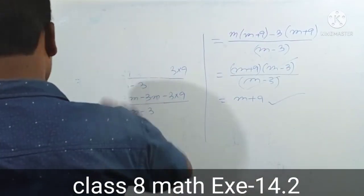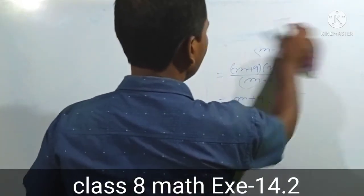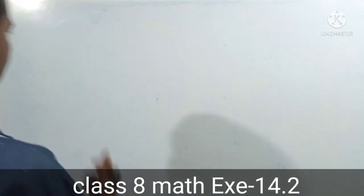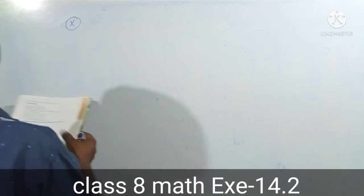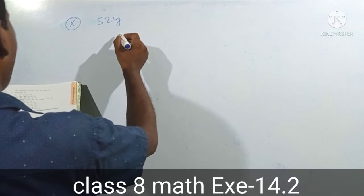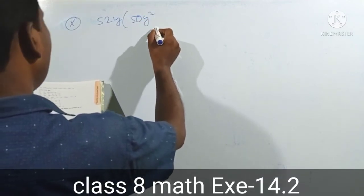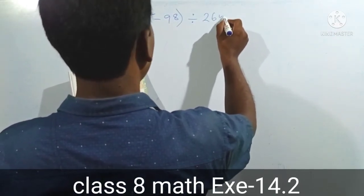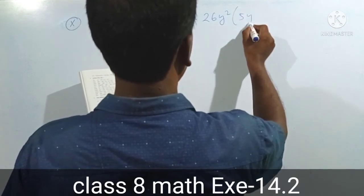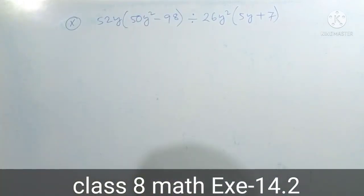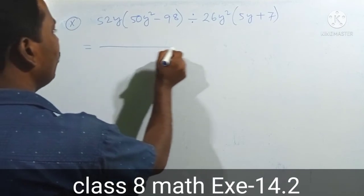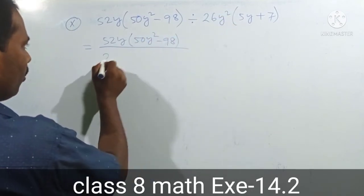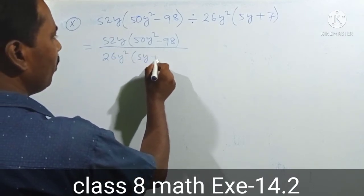Next, the last question. Question number 10: 52y times 50y squared minus 98, divided by 26y squared times 5y plus 7.